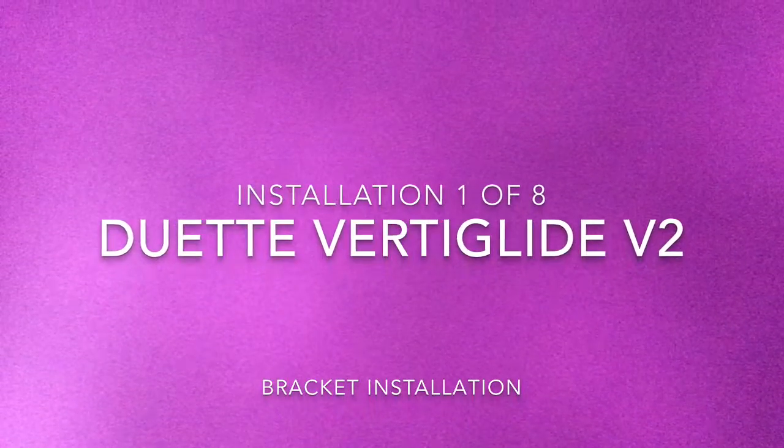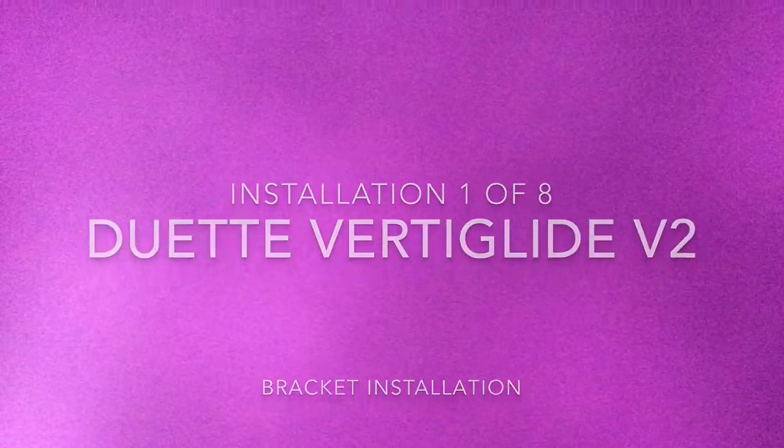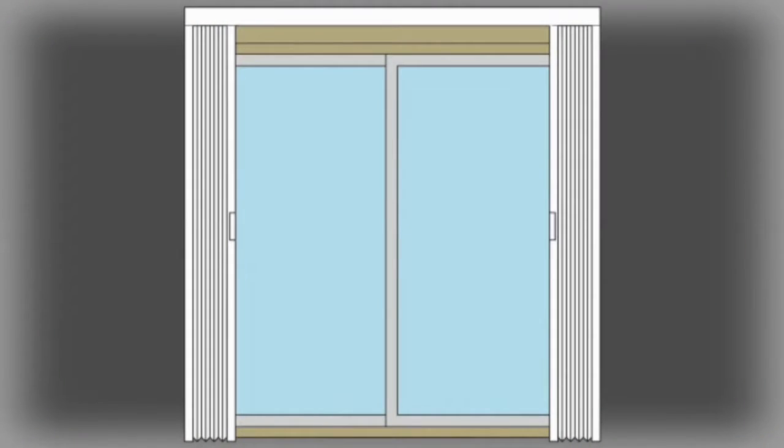Duet Vertiglide 2.0 Bracket Installation. To determine the bracket positioning, first locate the headrail placement.